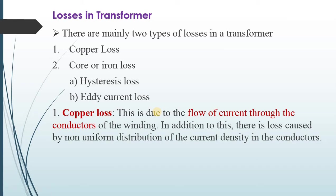Losses in transformer. There are mainly two types of losses in transformer: copper loss and core or iron loss. Again, in core or iron loss, there are two types: hysteresis loss and eddy current loss. Out of these, copper loss is a variable loss and iron or core loss is the constant loss. Let us see them one by one.